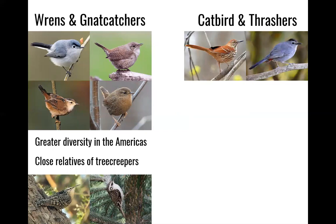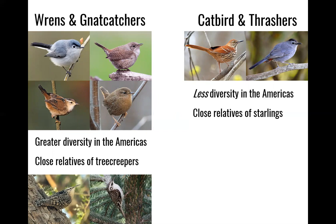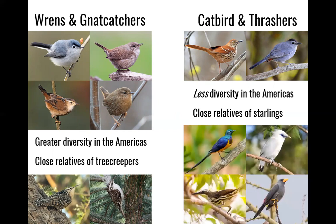The opposite is true for our gray catbird, the brown thrasher, and Minnesota's only representatives of the family Mimidae, or the mockingbird family. This group is actually much less diverse in the Americas when you compare them to their close relatives, the starlings. Here are just a few examples showcasing the enormous diversity in color, size, bill shape, body structure, and habitat usage that you see in the family Sturnidae. So what this is showing is that there is not a universal outcome of this trans-hemispheric dispersal — some groups arrive and become spectacularly successful, and others pale in comparison to their close relatives.